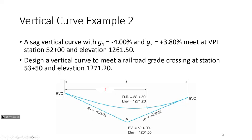I want to make sure we're clear on some basic terminology. If I have a curve, this is the VPI, this is the VPC, and this is the VPT. The curve starts at X equals 0 at the VPC. At the VPT, X equals L. So at the midpoint of the curve, X equals L over 2. The question is: what is the value of X at our known station? The VPI station is 52, and our known point — we're trying to match a railroad crossing — is at station 53 plus 50. I propose that for this problem, X is going to be L over 2 plus 150. Because the VPC is X equals 0, the VPI is X equals L over 2, so to get to our point in question we go L over 2 plus 150.